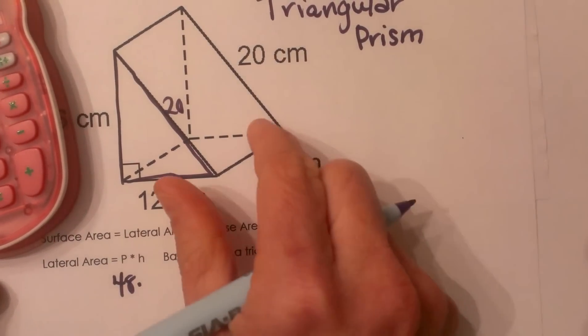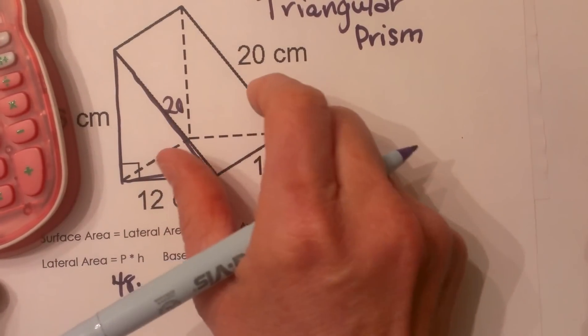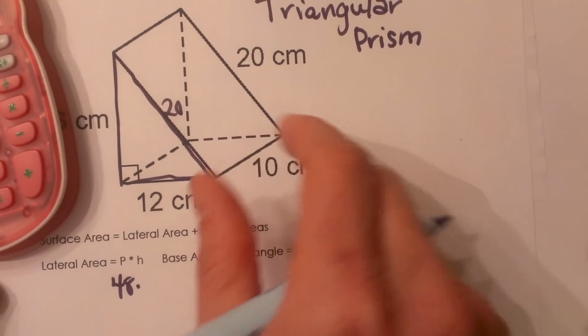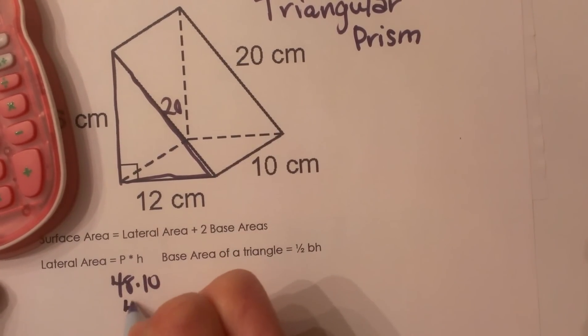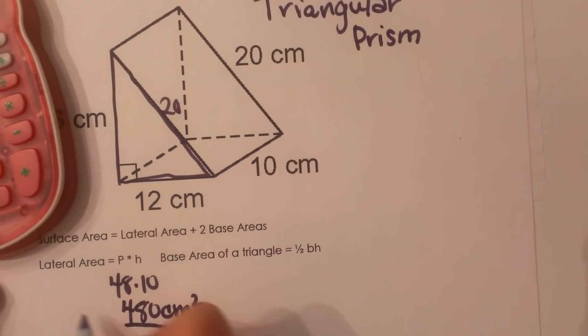Now what is the height? The height we're talking about is the height of the prism. So this is the height of the prism. If I flipped it up, it would be 10 tall, so that's 10. So that's 480 centimeters squared for my lateral area.